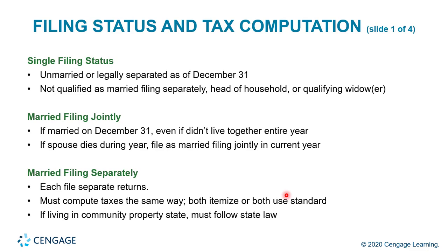Single filing status applies to those who are unmarried or legally separated as of December 31st and do not qualify as married filing separately, head of household, or qualifying widower. For married filing jointly, if you are married on December 31st — even if you didn't live together the entire year — you file jointly. If a spouse dies during the year, file as married filing jointly in the current year. The IRS considers you married for the whole year if you marry at any point during that year. Similarly, if you divorce or legally separate at any time before December 31st, you qualify under single status.